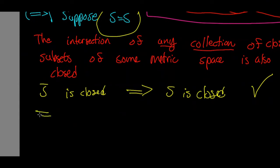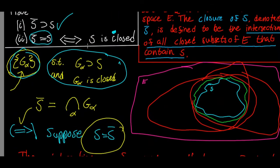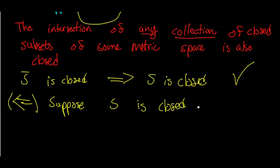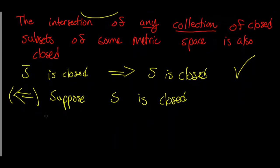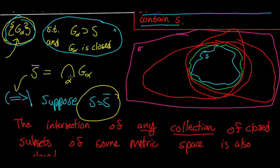Now let's go from right to left. We first suppose that S is closed, and then we want to show that S is equal to its closure. The closure of S is the intersection of all closed sets in the metric space E — whatever metric space S lives in — that contain S.